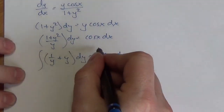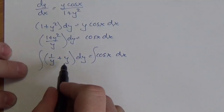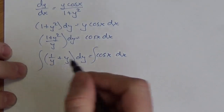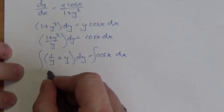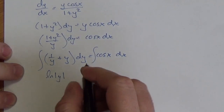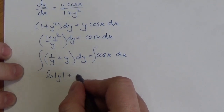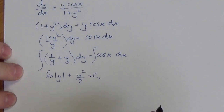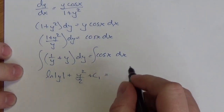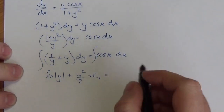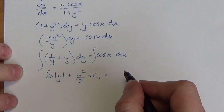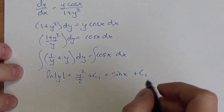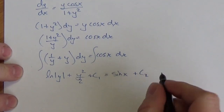Now I can integrate both sides and split this up into two integrals. The antiderivative of 1 over y will be the natural log of the absolute value of y, plus y squared over 2, and then there's going to be an arbitrary constant. The antiderivative of cosine is going to be sine of x, and then we add this second arbitrary constant.